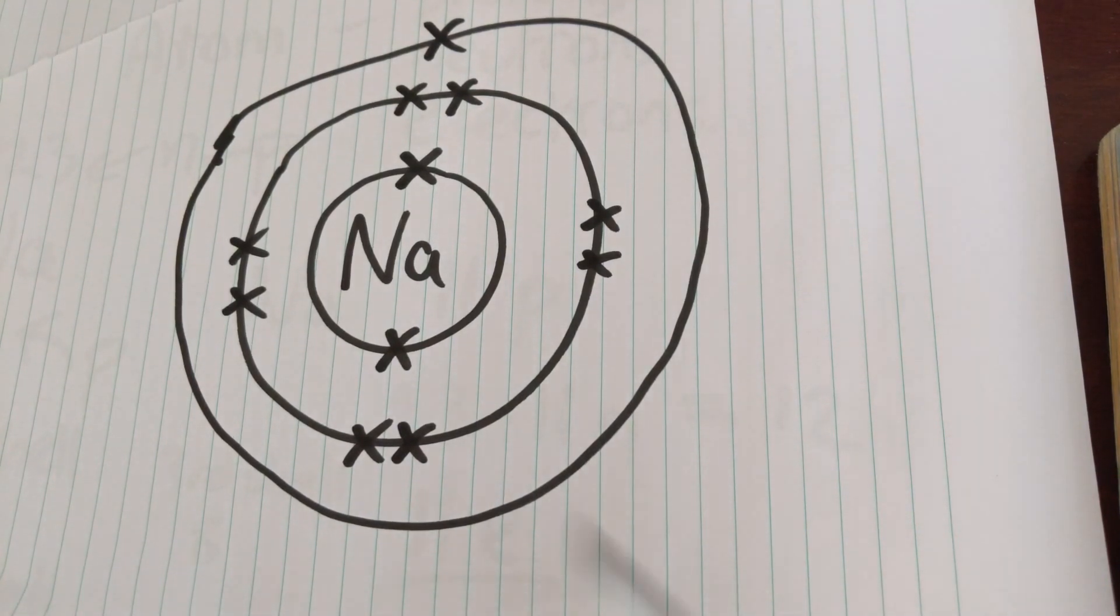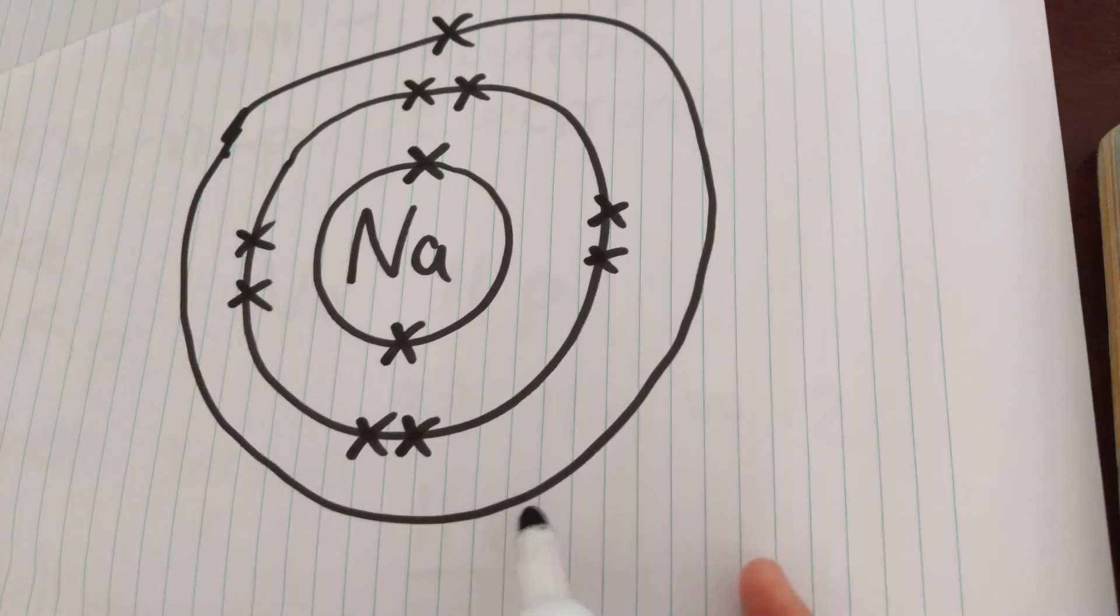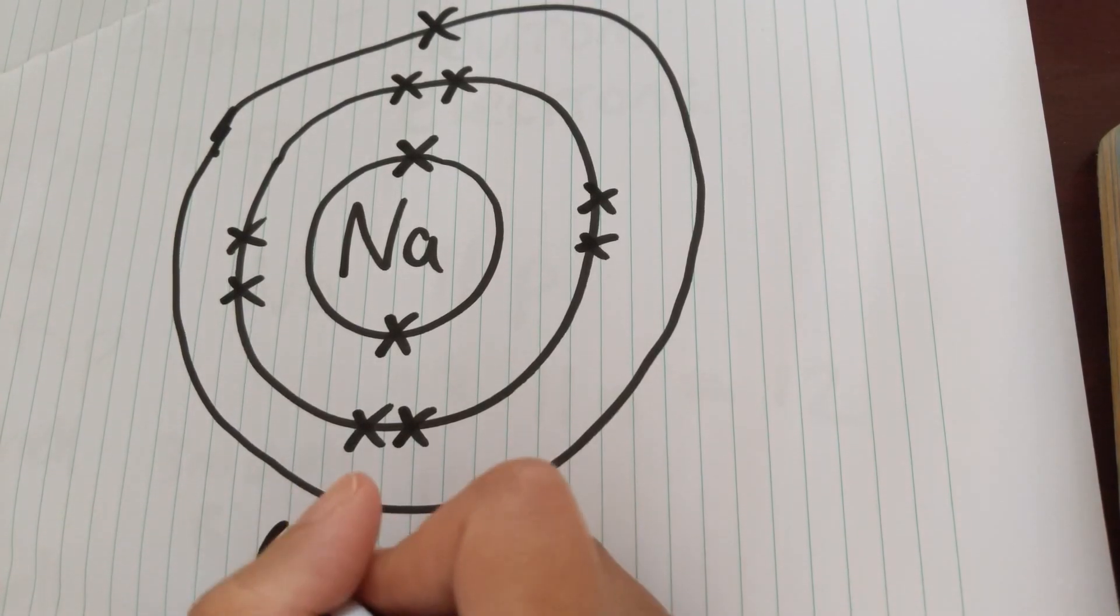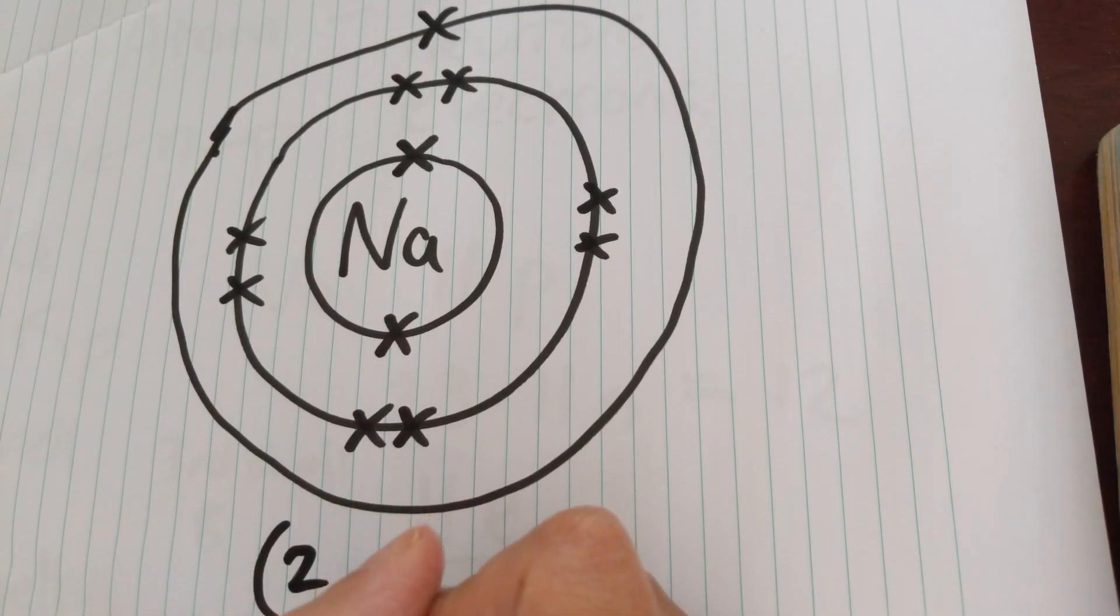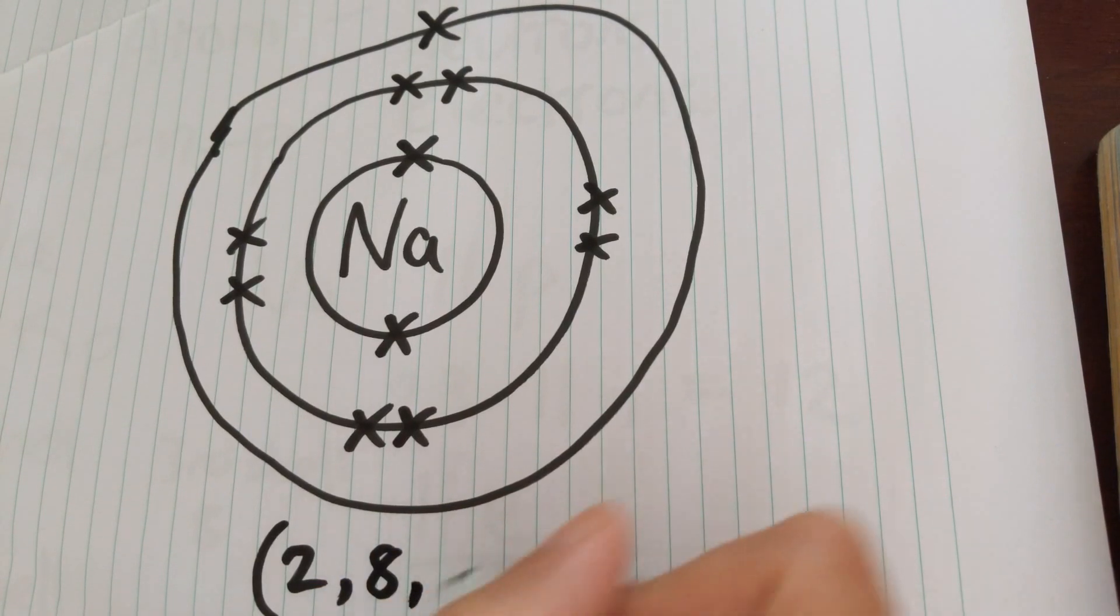So that is your electron configuration for sodium. And the way you'd write the electron configuration, open brackets, two, comma, eight, comma, one.